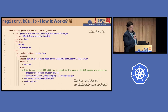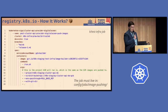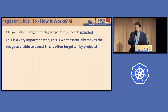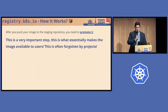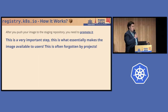This is the job that runs when you trigger a release — for example, on each push to main or to release branches. There's a special hint that this job must live in a specific place: config/jobs/image-pushing. After you push your image to the staging repository, you need to promote it. This is where we have a handy tool called K-Promo. This is a very important step because if you don't do it, images won't be available to users — this is often forgotten by projects, ending up in a situation where users see your release on GitHub but the image is not available.